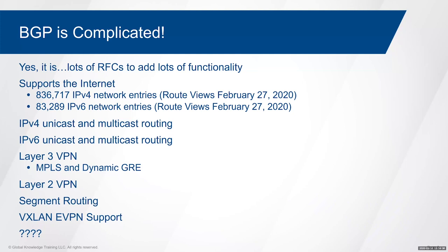BGP is a very flexible protocol, and yes, it can be complicated. There are lots of RFCs tied to it. The more flexible something is, the more complicated it tends to be. But you don't have to make it complicated — the base configuration can be fairly simplistic. There are lots of what I'd call 'nerd knobs' when it comes to BGP, lots of things you can tweak, but you don't have to just because you can.